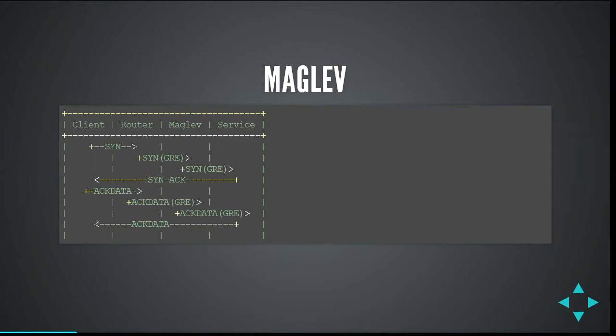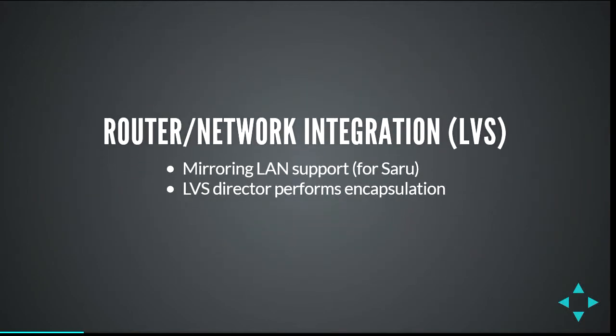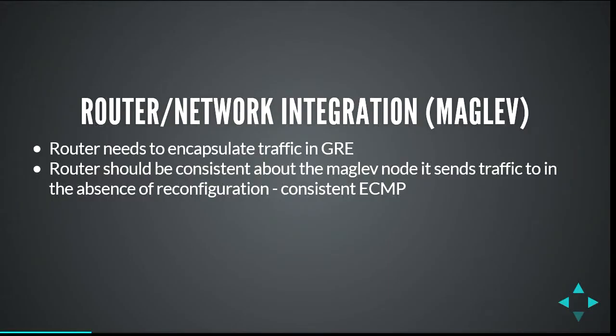LVS in this configuration needs mirroring support in your network switch — you have to send the same traffic to every LVS server. Maglev flips this around: the router does the encapsulation. Most routers can talk GRE tunnels, so GRE seems like a pretty good choice. It's not clear to me whether it's the best choice, but Maglev does GRE, so I'll do GRE.